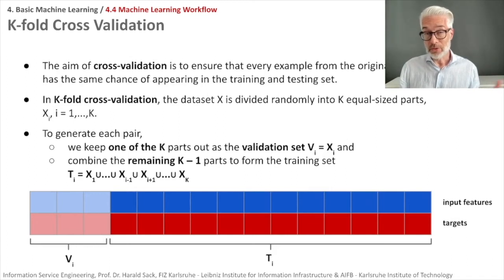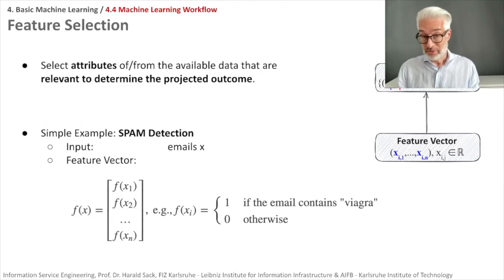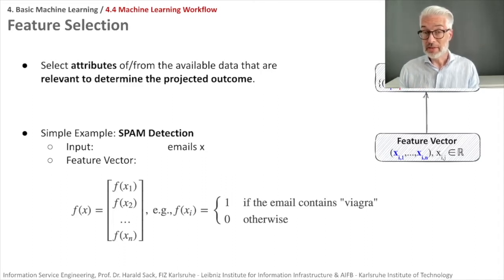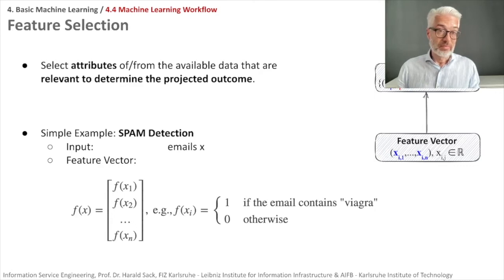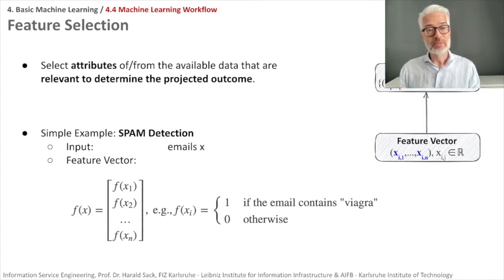Now we know how to split our data. Another important step is to select specific features or attributes we really want to use. We have to find out which features in our data are relevant to determine the projected outcome — for that we can do correlation analysis. As a simple example: suppose we do spam detection and our input vector is a set of emails. Do we take the entire email as a feature vector, or how do we create features from it?